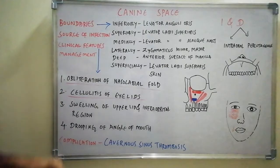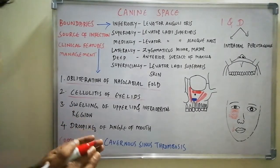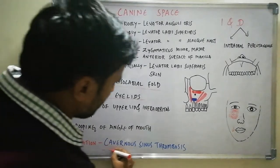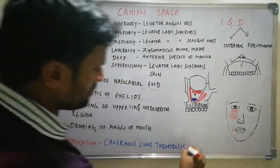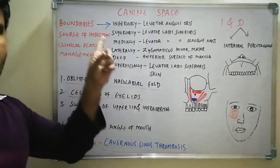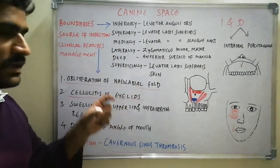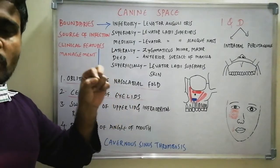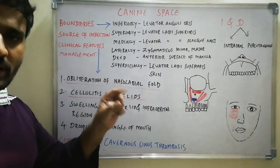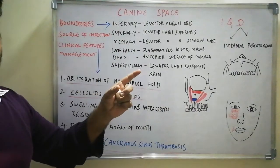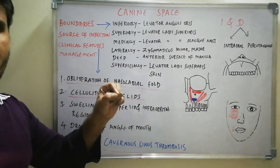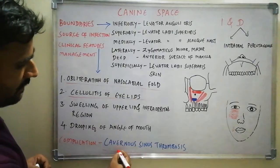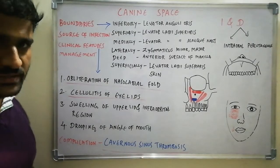If canine space infection is left untreated, it will lead to cavernous sinus thrombosis, which is the most important complication. Infection from the canine space can travel through the facial vein, then through the inferior ophthalmic vein and superior ophthalmic vein, and then involve the cavernous sinus. So the most important complication is cavernous sinus thrombosis.